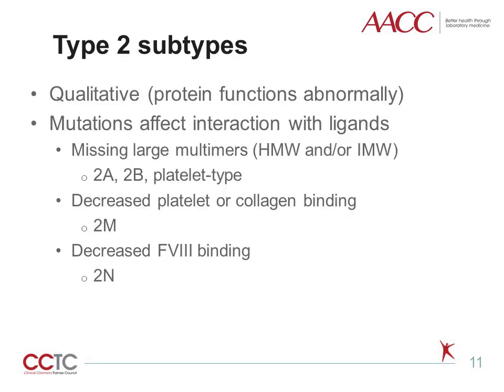The type 2 subtypes account for 10% to 15% of von Willebrand disease cases and are defined by qualitative abnormalities, dysfunctional von Willebrand factor, which can be due to multimeric defects where the larger, more functional multimers are absent, or loss of function mutations causing decreased platelet, collagen, or factor VIII binding. These defects, along with associated subtypes, are listed on the slide. In type 2B and platelet type, large multimers are absent due to increased interaction with platelets, resulting in clearance of large von Willebrand factor and platelets. The bleeding symptoms are generally mild to moderate.